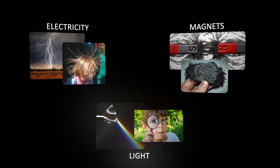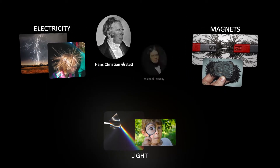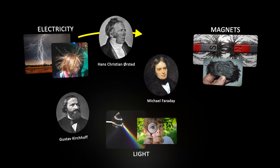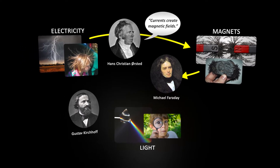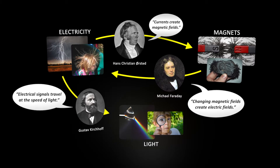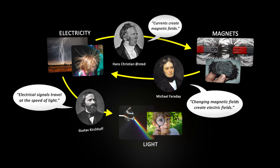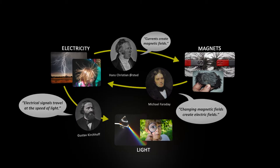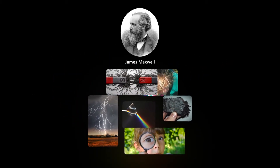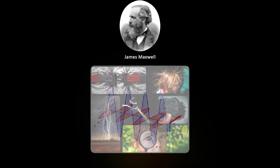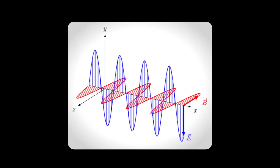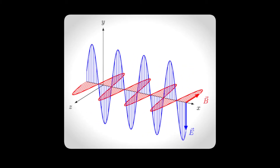But starting in the early 1800s, Ørsted, Faraday, Kirchhoff, and other scientists started discovering connections between these seemingly unrelated fields. The story of the unification of electricity and magnetism is long and fascinating, but here we will fast forward to the end, when James Maxwell showed that electric and magnetic fields can propagate through space as electromagnetic waves, and furthermore, that these electromagnetic waves are in fact light.